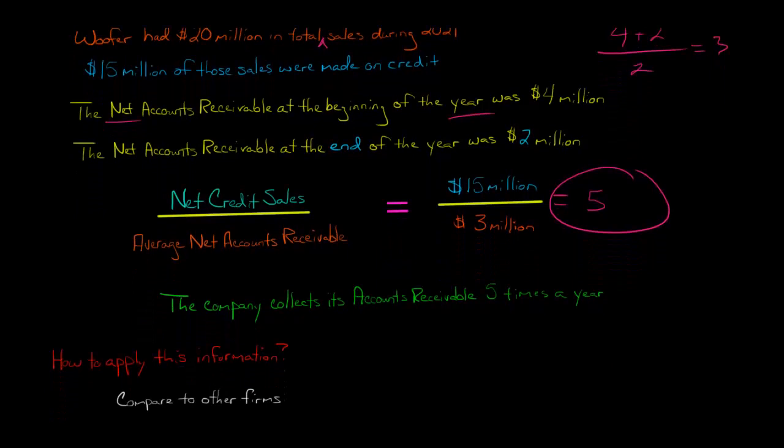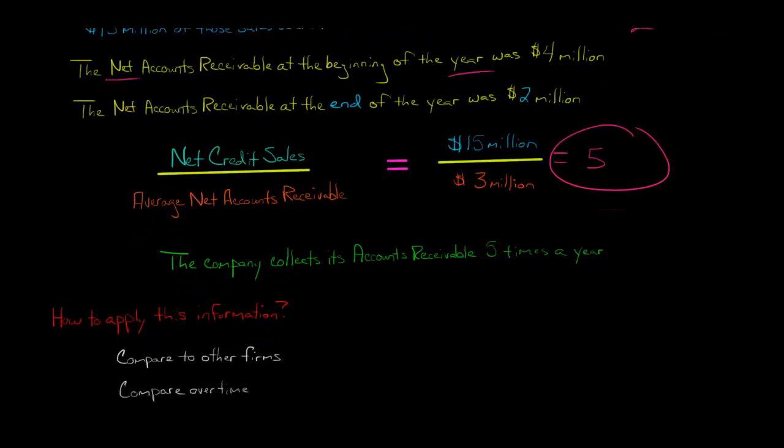Well, you can look and say, compared to other firms in this industry, how is Woofer doing? Does it collect receivables a lot more times in a given year than its competitors or a lot fewer times? And then you can also look at a trend analysis over time. So let's say that we say, is 5 good or not? Well, let's say the previous year was 6, the previous year was 7, the previous year was 8, like if we go back in time. And then this year was 5. So we see that there's a trend that over time we're collecting our receivables a lot fewer times each year.